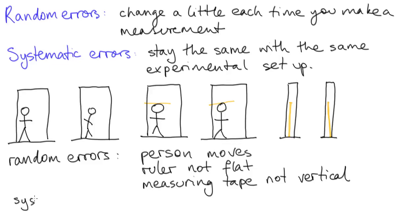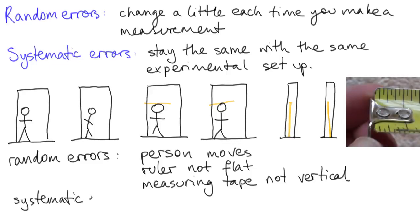Now what about systematic errors? Maybe the measuring tape has had its end bent off so that the counting starts at half a centimetre instead of zero, or maybe it's an old plastic measuring tape that's been stretched out of shape and the centimetre marks are no longer really one centimetre long.